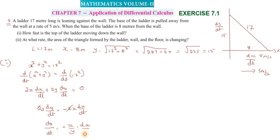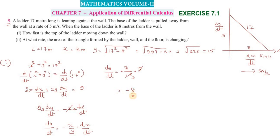Substituting the values: dy/dt = −(x/y)(dx/dt) = −(8/15) × 5 = −8/3 meters per second. The negative sign indicates the top of the ladder is moving downward. So the top of the ladder is moving down at 8/3 meters per second.